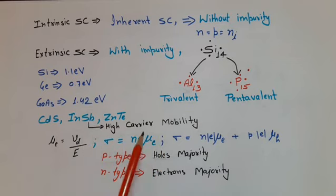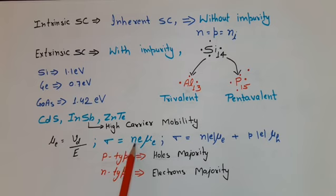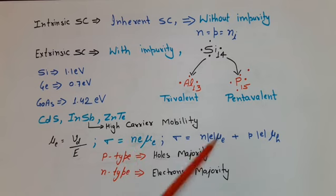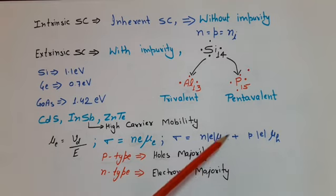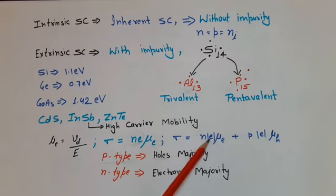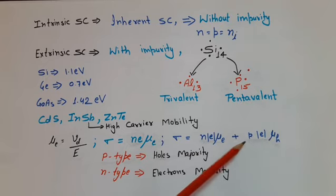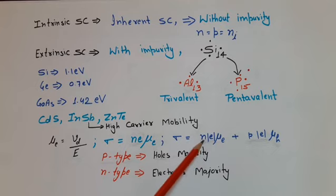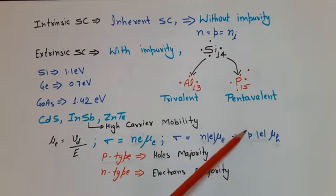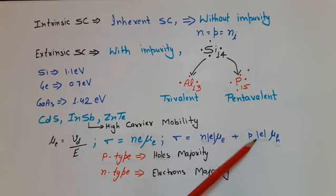If we talk about conductivity of a material, conductivity is equal to availability of charge per unit volume multiplied by mobility. In case of semiconductors, both electrons and holes are responsible for carrying current. Therefore, conductivity will depend on both. The conductivity formula for a semiconductor is: σ = N·e·μe + P·e·μh, where N is electron concentration (number of electrons per unit volume), P is hole concentration (number of holes per unit volume), and e is the electronic charge equal to 1.6 × 10⁻¹⁹ coulombs.